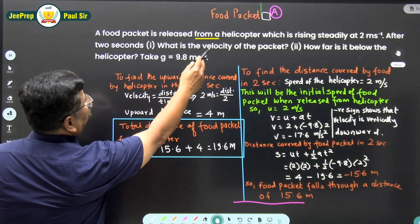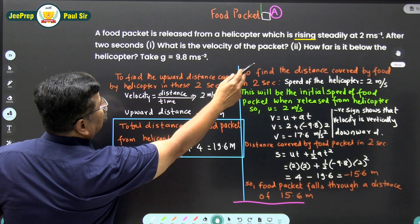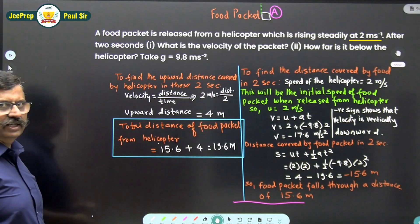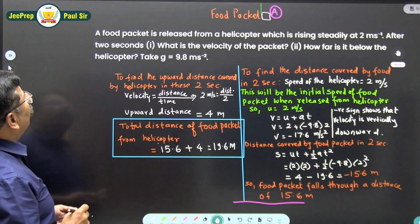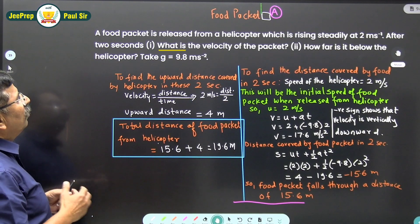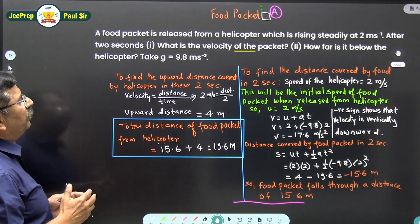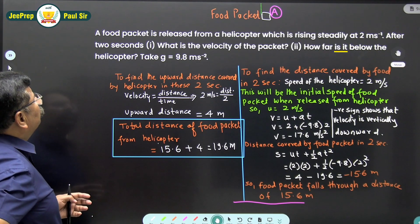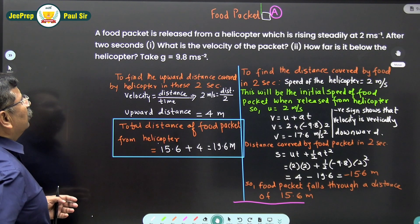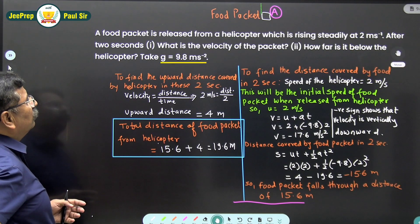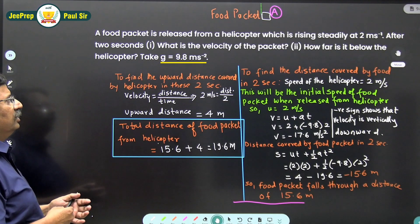A food packet is released from a helicopter which is rising steadily at 2 meters per second. After 2 seconds, (i) what is the velocity of the packet, and (ii) how far is it below the helicopter? Take g = 9.8 m/s².